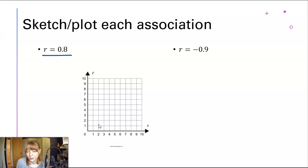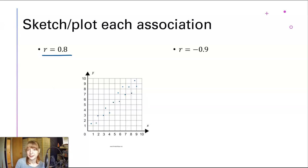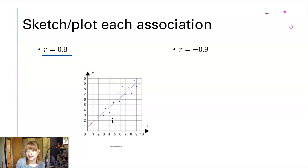First let's do R = 0.8. I know this is going to go up to the right, and it's going to be a fairly strong association. If we were to draw the best fit line, it would go right through there, and these values are pretty close to the line. So that's a good 0.8 — a pretty strong positive association.